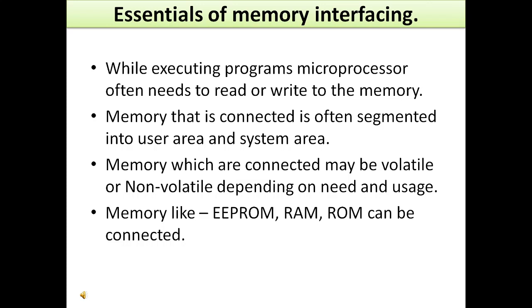The microprocessor, while executing any program, often needs to read or write from the memory. In the case of 8085, memory is segmented into two parts: one is the user area and another is the system area. The system area is protected and is only used by the system. But in the user area, we can choose any of the locations provided by the system manufacturer where we can write our programs or codes.